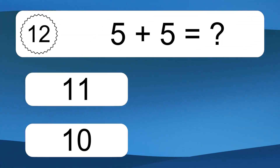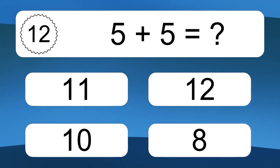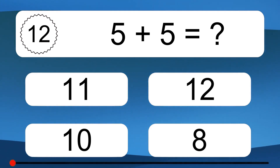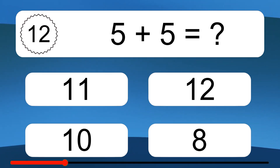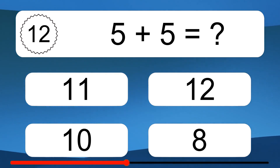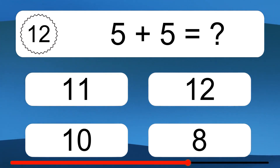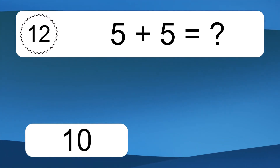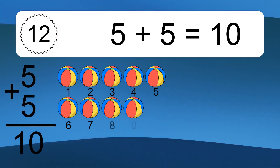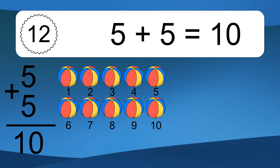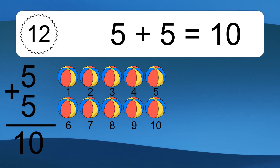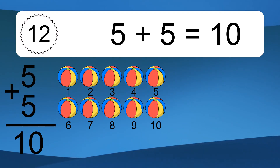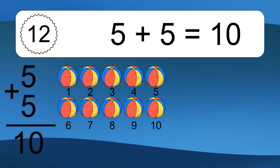5 plus 5 equals what? 5 plus 5 equals 10. Let's count it: 1, 2, 3, 4, 5, 6, 7, 8, 9, 10.